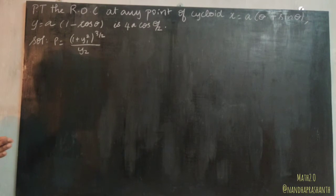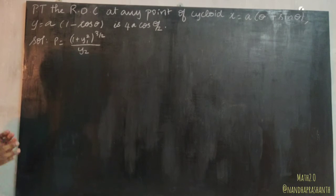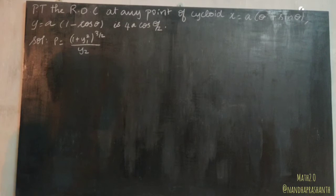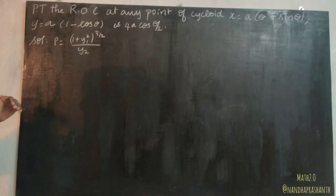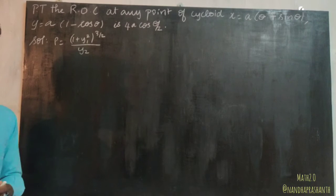y₁ is dy/dx. Since we have parametric equations, dy/dx = (dy/dθ) divided by (dx/dθ). So we need to find dy/dθ and dx/dθ.